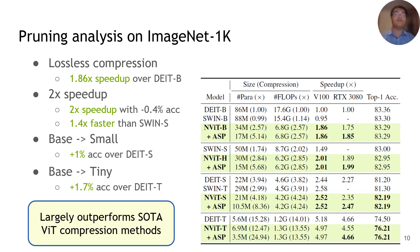Specifically, we report four pruning configurations. The NViT-Base setting achieves 1.86x lossless speedup over the DeiT-Base model. NViT-Half achieves 2x speedup over DeiT-Base with 0.4% accuracy drop, which is also 1.4x faster than the SWIN-Small model. NViT-Small prunes the base model to the same latency of DeiT-Small, with 1% accuracy gain over the DeiT-Small model. Similarly, NViT-Tiny outperforms DeiT-Tiny by 1.7% when pruned to the same latency. All these configurations largely outperform state-of-the-art vision transformer compression methods like SVITE and Autoformer.